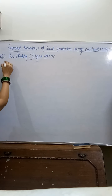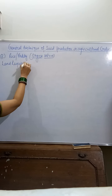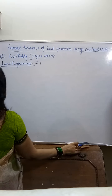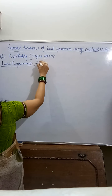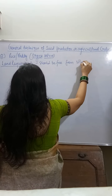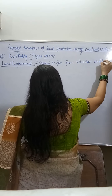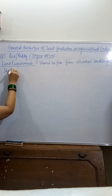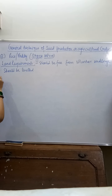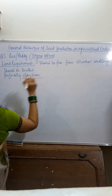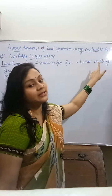The first general technique is land requirement. The first requirement is land should be free from volunteer seedlings or plants. The second requirement is the selected plots should be leveled. And the third important requirement is soil, preferably clay loam.